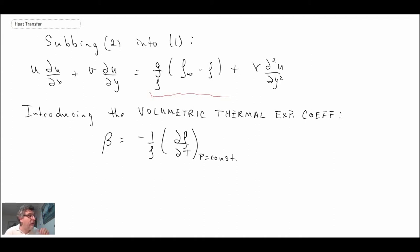So beta is related to the change in density with temperature at constant pressure. With this, we can look at it for a couple of different scenarios, be it a gas or a liquid.